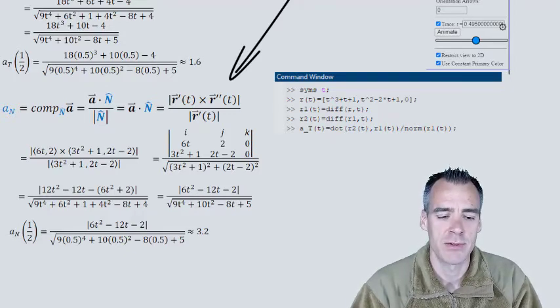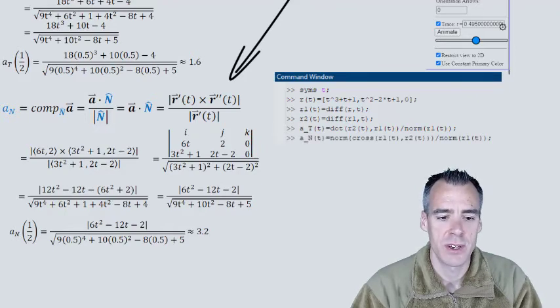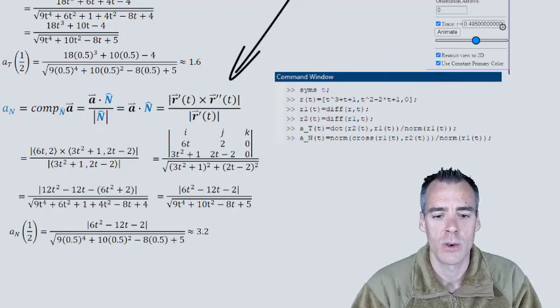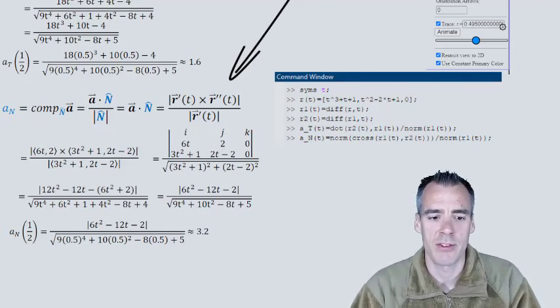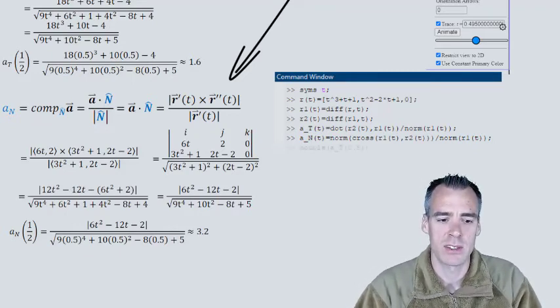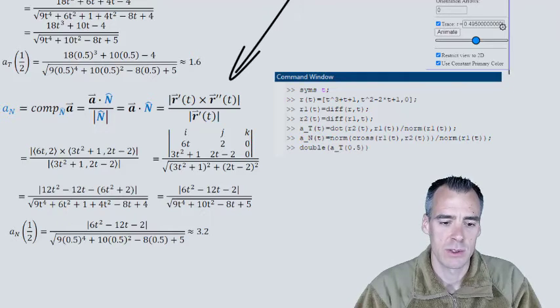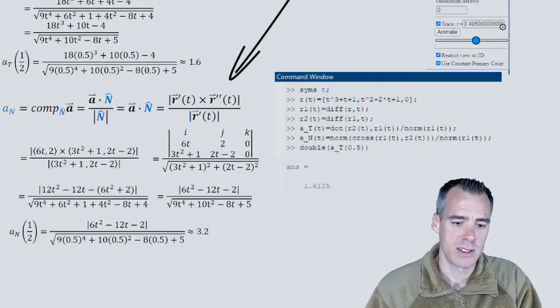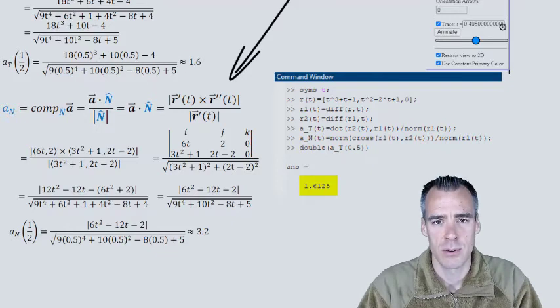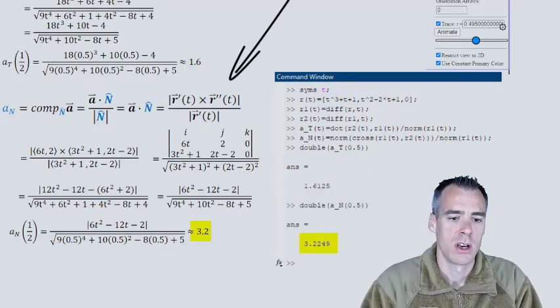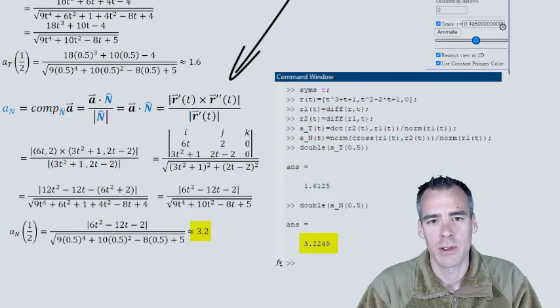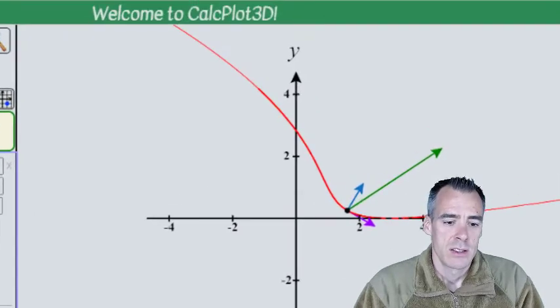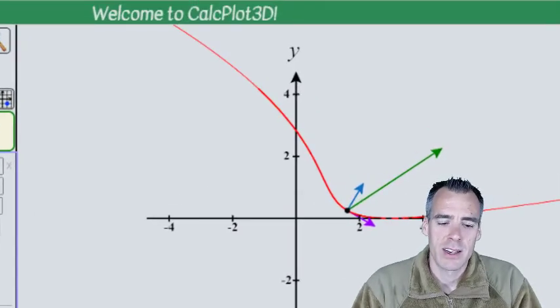Finally, all we do is plug in t = 0.5 for both of these, and if we want a decimal we can use the double command. You notice that we get 1.6 for our tangential component and 3.2 for our normal component, which matches up with what we found by hand with a little extra computational help. Looks like we're on the right track, getting double confirmation here.